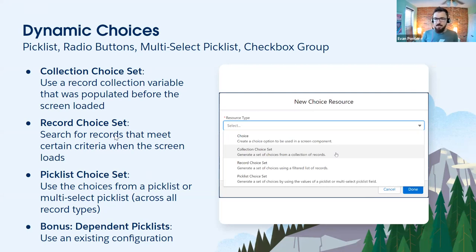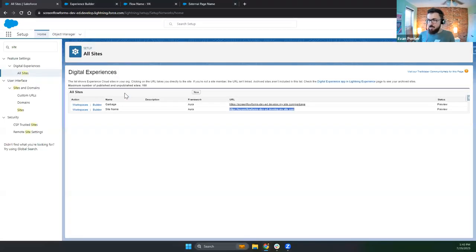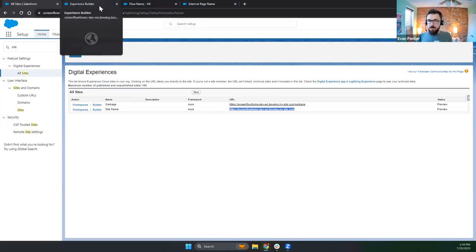These first two — collection choice set and record choice set — both involve getting records from your Salesforce database. There are some slight differences for which one you'd want to use depending on if you need to use that collection of records in other places in your Salesforce flow. Let's start with the collection choice set. What we do here is feed a collection of records into a picklist or radio button input type using a record collection that we retrieved earlier in the flow before the screen was loaded. What's useful about that is you can use that collection multiple times throughout your flow.